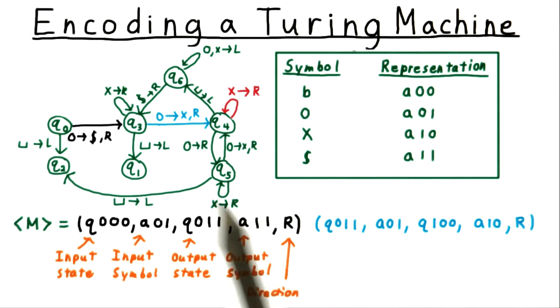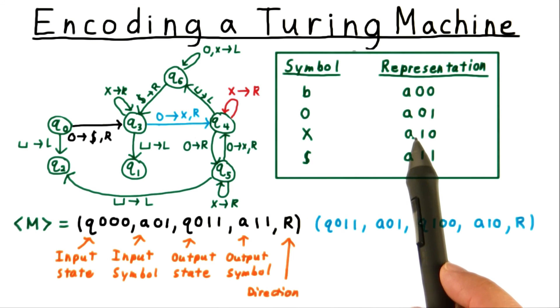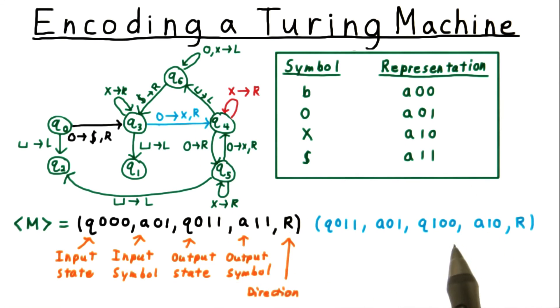And we're supposed to write x, so I'll look up the encoding for x, that's a10, like so, and we want to move the head to the right. So I include an r here.